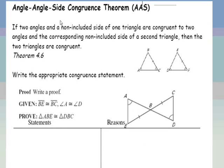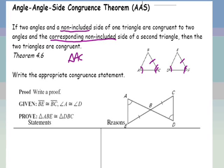Our final way of proving triangles congruent is the angle-angle-side congruence theorem: two angles and the non-included side of one triangle are congruent to two angles and the corresponding non-included side of a second triangle — it must be the corresponding non-included side — then the two triangles are congruent. First angle, second angle, and a side not between them but corresponding. Triangle ABC is congruent to triangle DEF, and my reason would be angle-angle-side congruence.